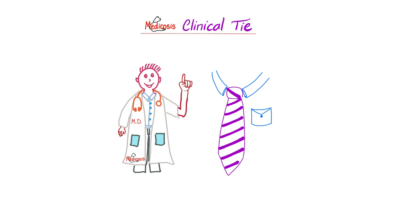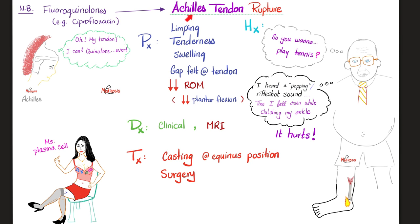Now let's take it to the next level and get clinical. There are many diseases that affect tendons. The most famous tendon in your body is probably the Achilles tendon, notorious for rupturing. There are groups of medications that can lead to Achilles tendon rupture — these are known as the quinolones, which include fluoroquinolones such as ciprofloxacin. This does not mean every patient taking these medications will rupture their Achilles tendon; Achilles tendon rupture is simply more common with this group of medications.